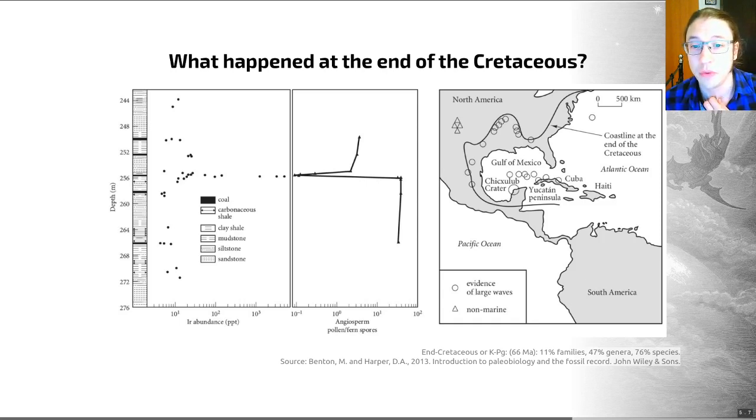At first this was controversial, in no small part because Alvarez is a physicist and there were lots of people who actually studied this extinction who had the impression we've studied this for years and we've not noticed. But in 1991 a crater was identified at Chicxulub in Mexico. This is a crater that is found in upper Cretaceous sediments on the Yucatan Peninsula. You can see it on a map here. Here's the crater and here we've got lots of evidence for large waves which we would expect to be associated with a major bolide impact such as this.